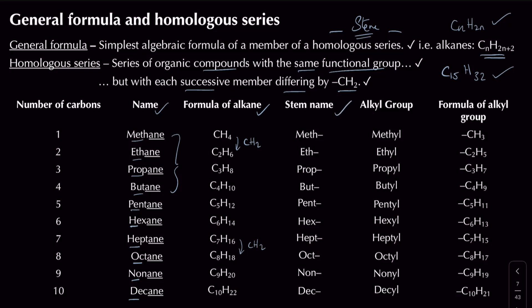Now for the term 'alkyl group'. If you have a carbon chain — say five carbon atoms long — and you add a branch to it, you refer to that branch as an alkyl group and give it a name. If it contains one carbon atom, it's a methyl group; two carbon atoms, ethyl; three, propyl; and so on up to nonyl. You kind of get the idea.